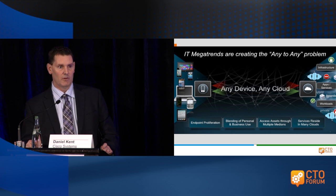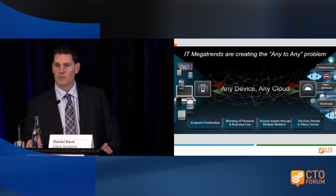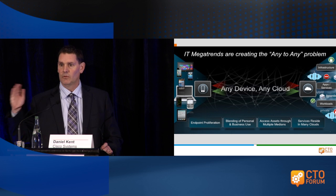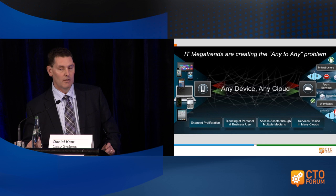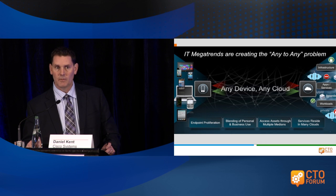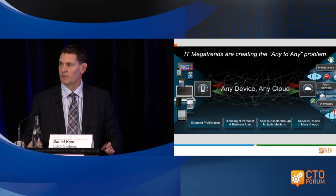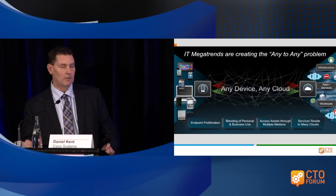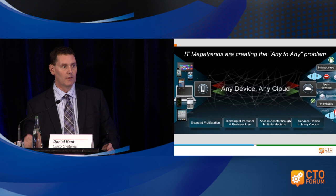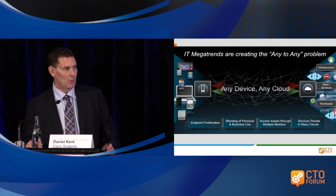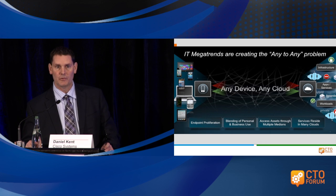Phase two is about the internet of everything — it's about sensors, refrigerators, coke machines connecting to the internet. On December 23rd, the first refrigerator part of a botnet happened. As we put more and more devices on the network, obviously they're going to be susceptible to the same threats. To quote Huggy this morning, we have to fix our broken windows here.